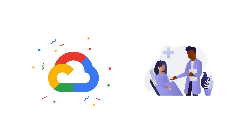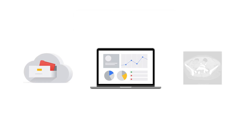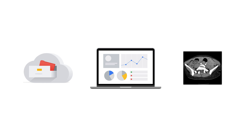Cloud computing has helped many industries innovate to new heights, and health care is no exception. In previous videos in this series, we looked at how the Cloud Healthcare API can help you store and access health care data in Google Cloud. In this episode, we'll explore how the Cloud Healthcare API can be used to store, retrieve, and analyze medical imaging data.